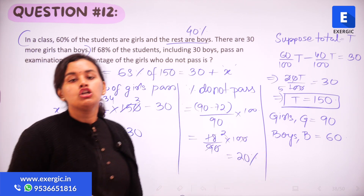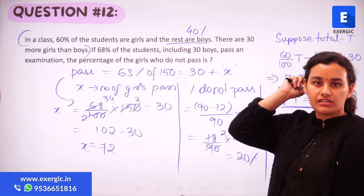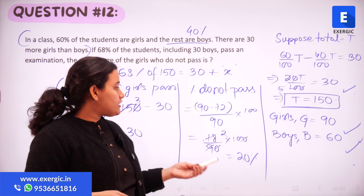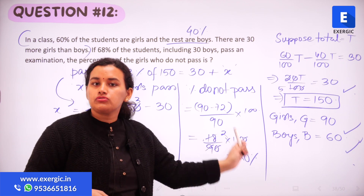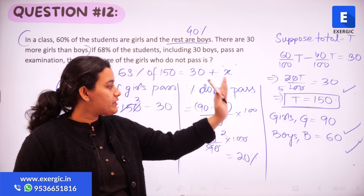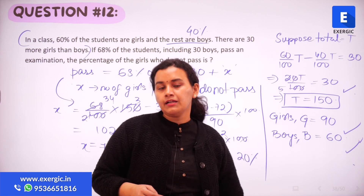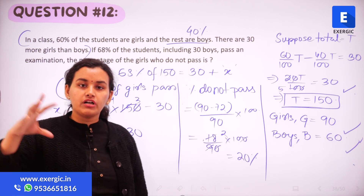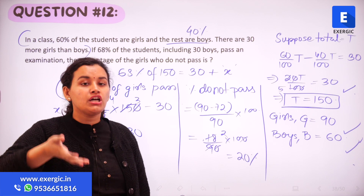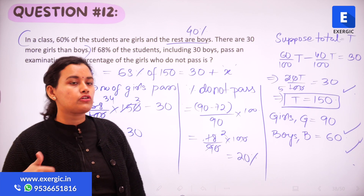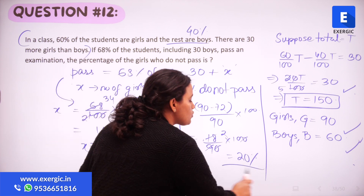The final answer — the required percentage — is 20%. Note that this percentage is calculated with respect to the number of girls, not with respect to the total number of students, because we found the number of girls who did not pass and express it relative to the total number of girls.